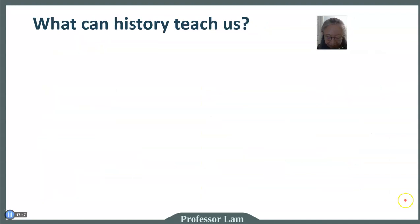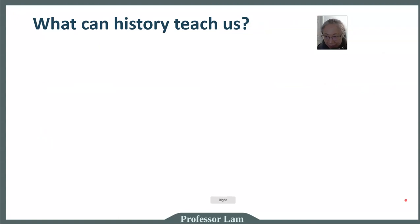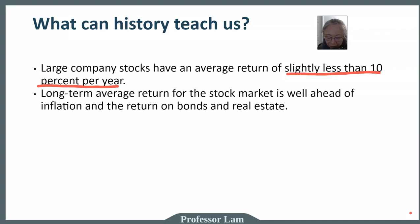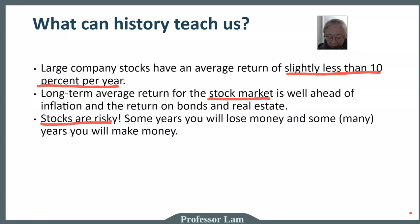Looking at the graph, we learn that large company stocks have an average return of a little less than ten percent per year — that's why we often use nine percent as our assumed return for investment planning and retirement planning. The long-term average return for the stock market is much higher than inflation and much higher than the return on bonds and real estate. In the long run, the stock market is still the best investment. However, stocks are risky — some years you will lose money.